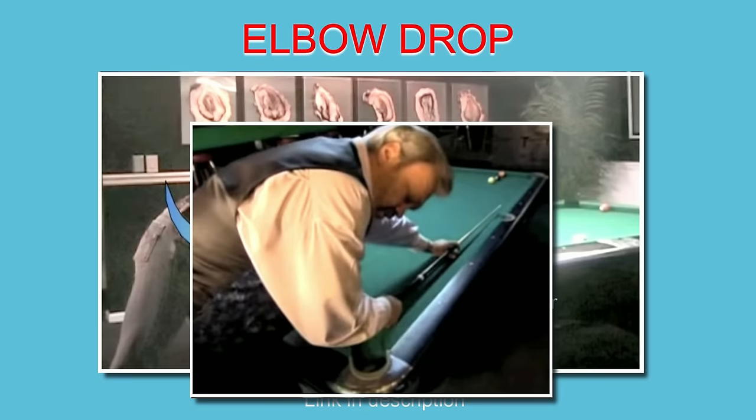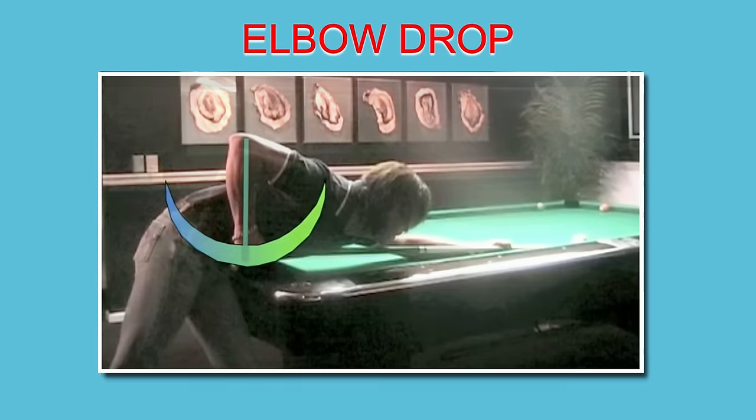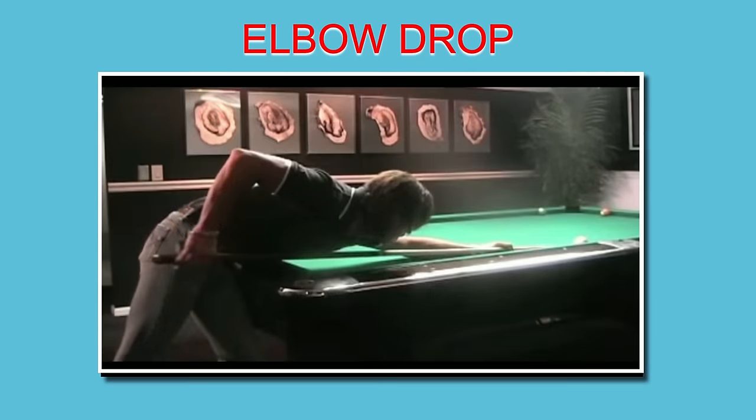Despite pro Mike Massey, who arguably possessed the most powerful stroke of his day, explaining how he drops his elbow, the presenter demonstrates how Mike's elbow is not a factor.